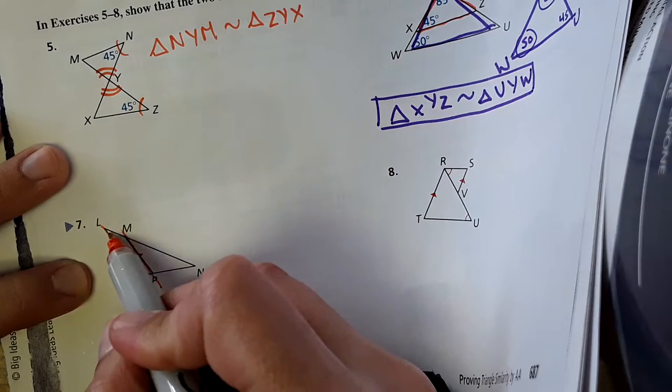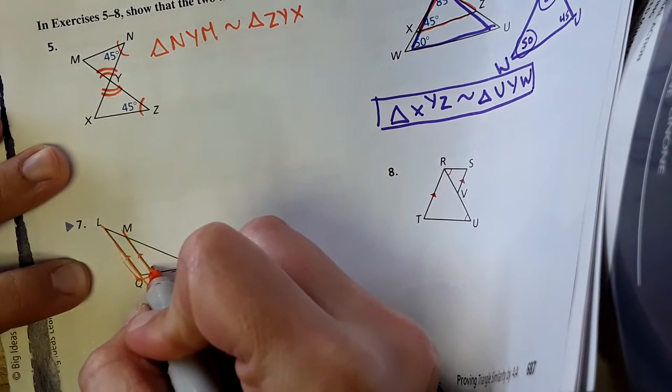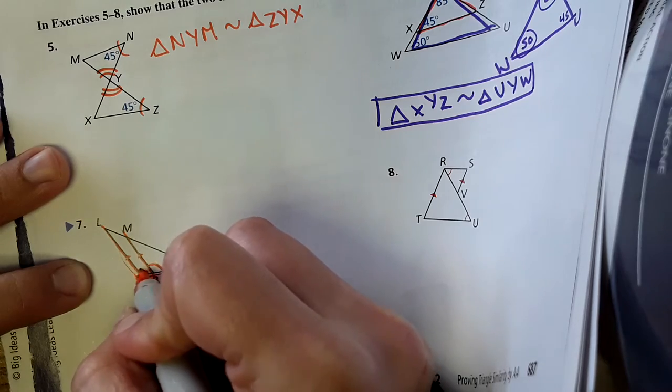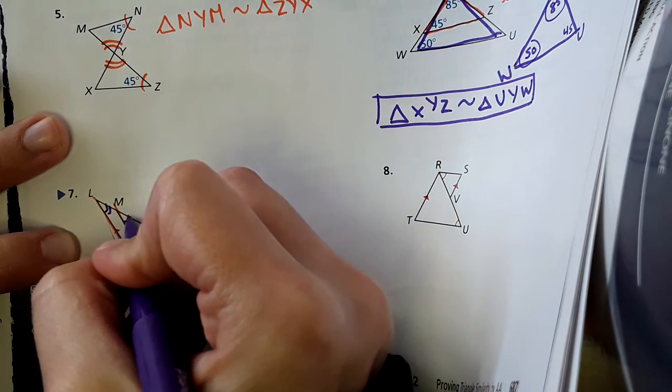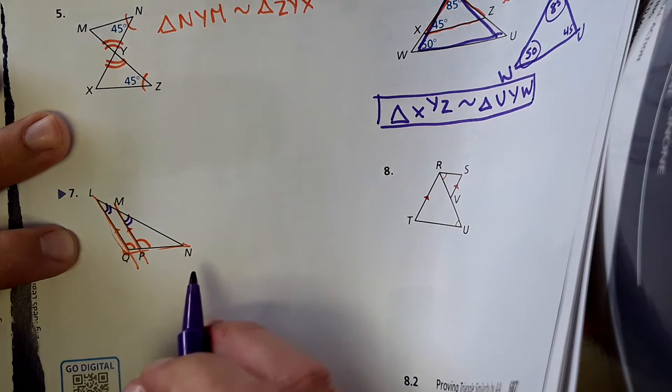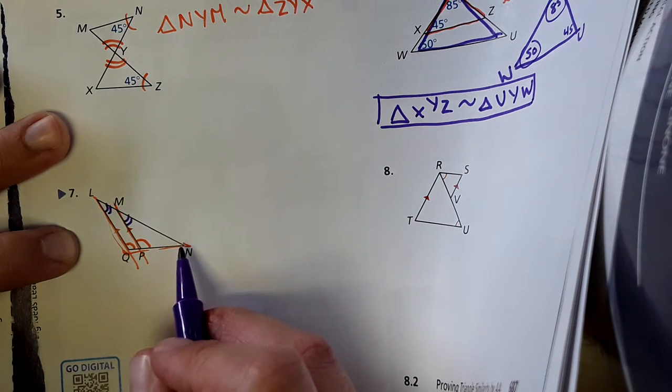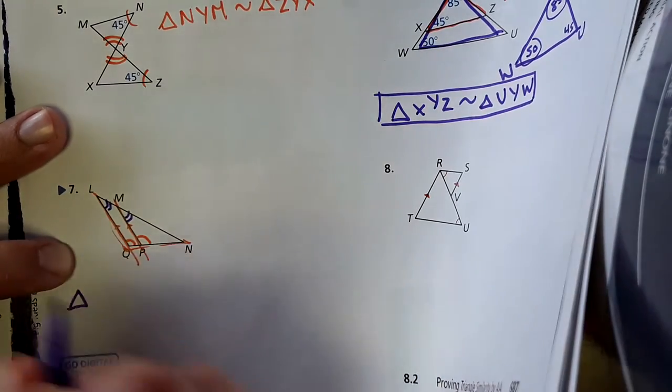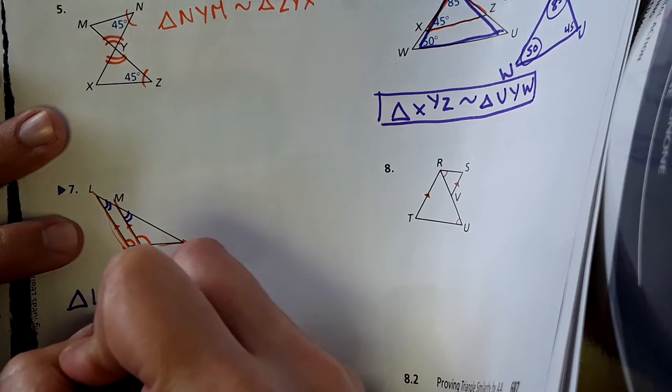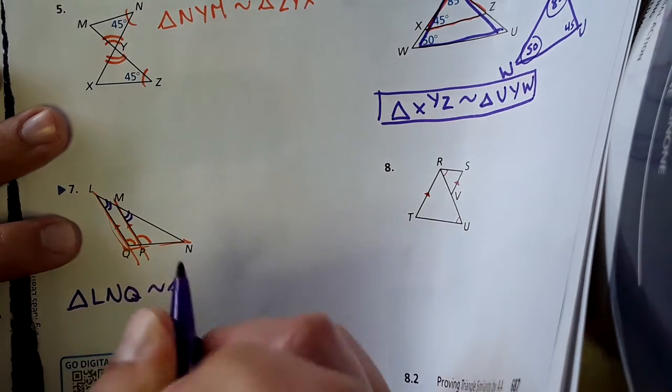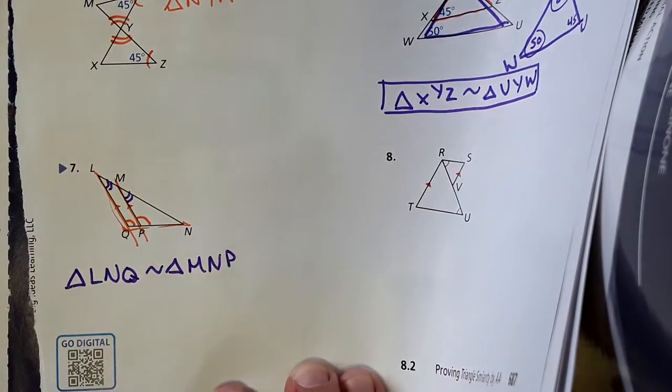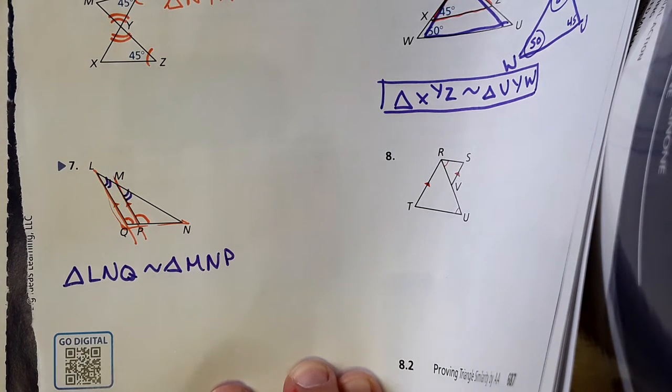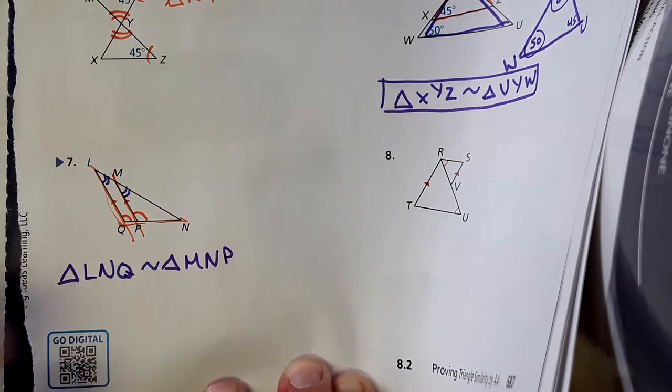So, let's go ahead and see. So, this angle equals this one. Then, this angle equals this one. And then, the third angle is a shared angle. So, based on the reflexive property, N would be equal to itself. So, triangle L, N, Q is similar to triangle M, N, P. Okay, we're going to skip number eight and just go to the back.